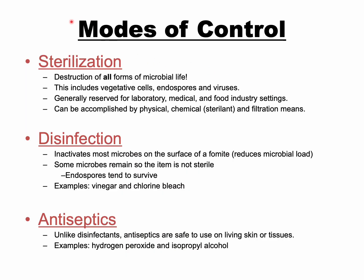Over the next slides we'll talk about five different modes of control. First is sterilization — destroying all forms of microbial life, including endospores. Even though endospores are very resistant, for something to be considered sterilized, all microbial life must be gone from that environment or object. This is an extreme level of control reserved for laboratories, medicine, and certain food industry applications.